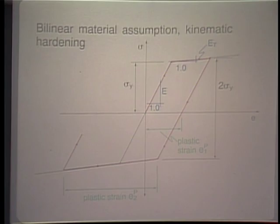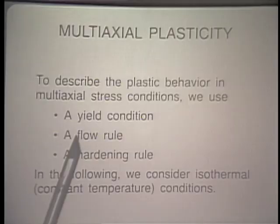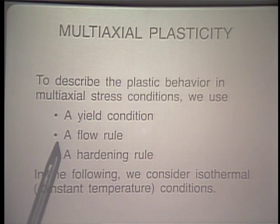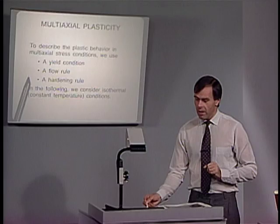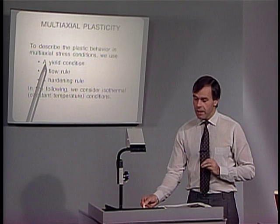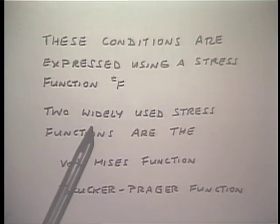These were a few words on modeling one-dimensional elasto-plastic behavior. Now let us look at multi-axial plasticity — how we model plastic behavior in multi-axial stress conditions. For that we need a yield condition, a flow rule, and a hardening rule, considering isothermal (constant temperature) conditions. Two widely used stress functions are the von Mises function and the Drucker-Prager function.